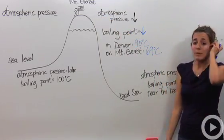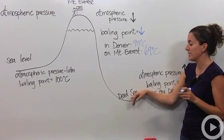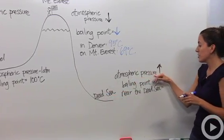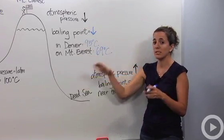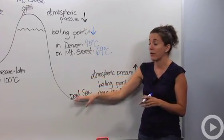All right, let's do the opposite. Let's say we go down to the lowest point on the planet, which is the Dead Sea. The atmospheric pressure there is extremely high, meaning we have a lot of air molecules pouring down on top of us. It's very high pressure down there.